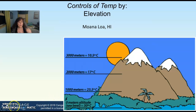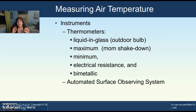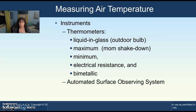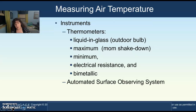So those are four ways of controlling temperature. We can measure temperature by a range of thermometers: liquid and gas in glass thermometers like you see outdoors with the glass bulb at the bottom; maximum thermometers — the kind your mom would shake down before putting it in your mouth; minimum thermometers; electrical resistance thermometers; and bimetallic thermometers. We'll also talk about observation weather stations.